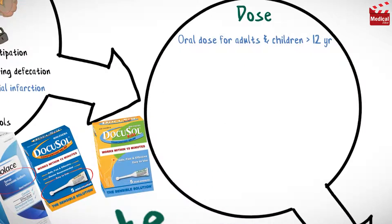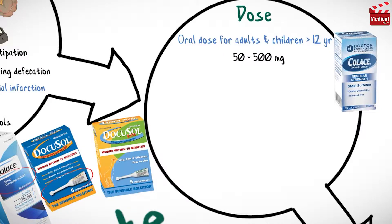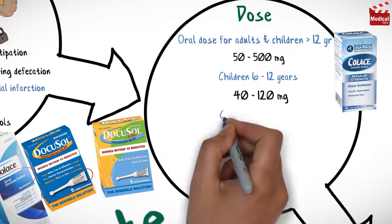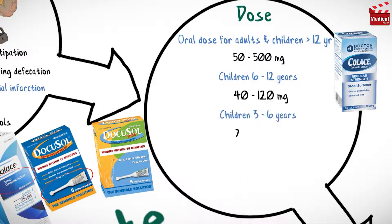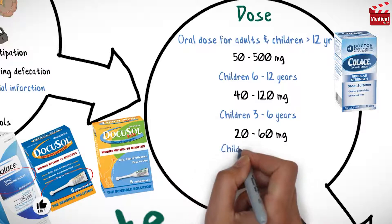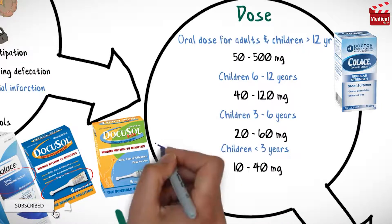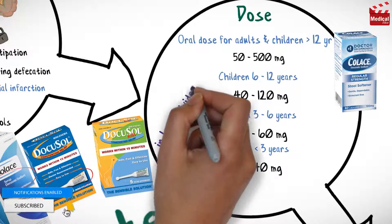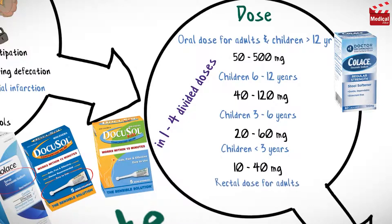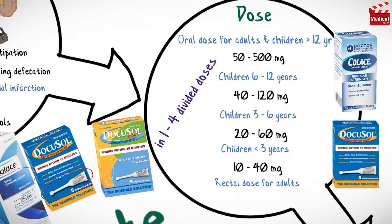The usual oral dose of docusate sodium for adults and children older than 12 years is 50 to 500 mg. For children 6 to 12 years, the usual dose is 40 to 120 mg. For children 3 to 6 years, 20 to 60 mg. For children younger than 3 years, 10 to 40 mg — in 1 to 4 divided doses. The usual rectal dose for adults is 50 to 100 mg.